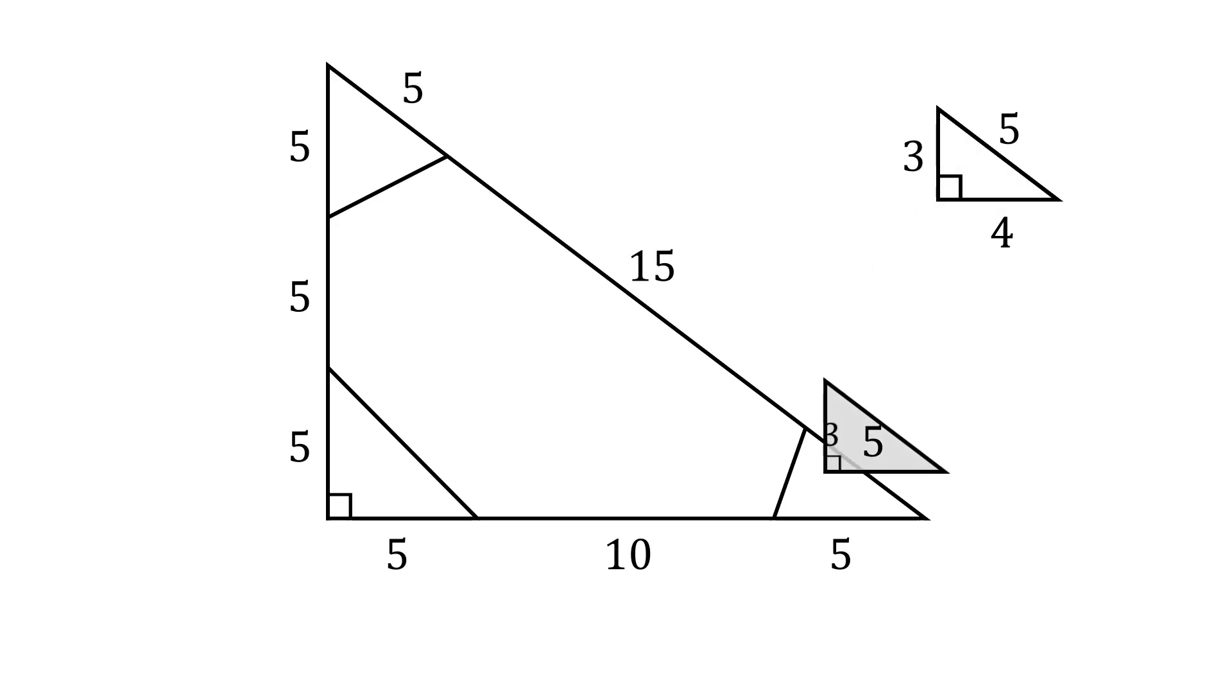We can take this 3-4-5 right triangle to the right corner, and see that the altitude is equal to 3. We'll take this to the top corner, and we'll see that the altitude is equal to 4. We're now ready to solve this problem.